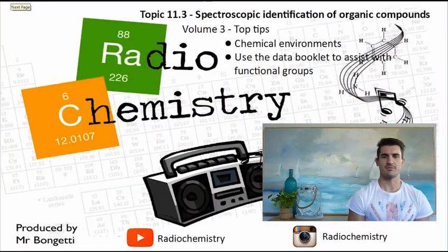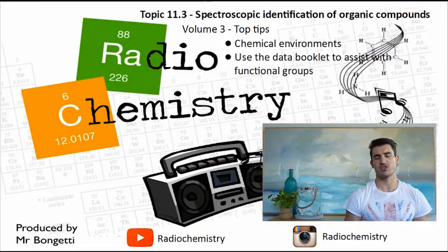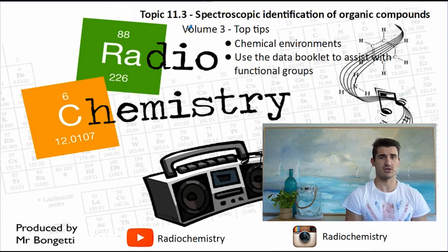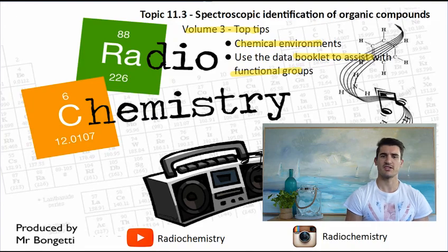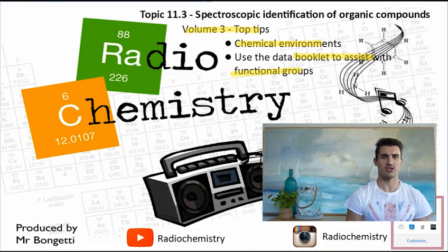Okay, so volume three, some top tips. Use the chemical environments. You can really get all of the information from the chemical environments. If you need to go a bit further, use the data book to try and work out what functional groups you've got present and you'll be given more information than just the NMR. Thanks for watching guys. Don't forget, drop a like on the video, subscribe if you're new and I'll see you next time.